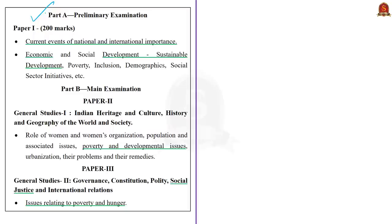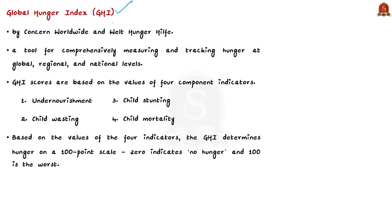The syllabus relevant is highlighted for your reference. Knowledge about hunger will help in mains preparation under GS Paper 1 in poverty and developmental issues, and in GS Paper 2 under issues relating to poverty and hunger. The Global Hunger Index is a tool for comprehensively measuring and tracking hunger at global, regional, and national levels. The GHI scores are based on values of four component indicators.